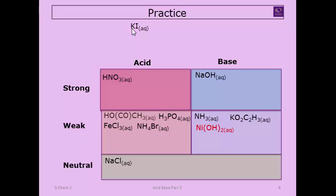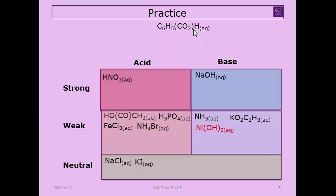Potassium iodide: potassium is a group one cation — neutral; iodide is a group-seven anion — neutral. Overall this salt is neutral. Next example: the structure shows a CO₂ group — that carbonyl bound to a hydrogen signals an organic acid, which is a weak acid.